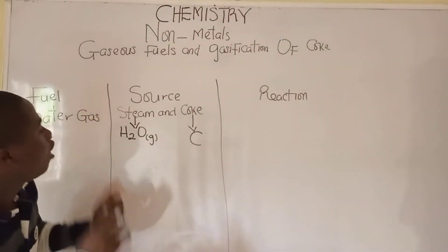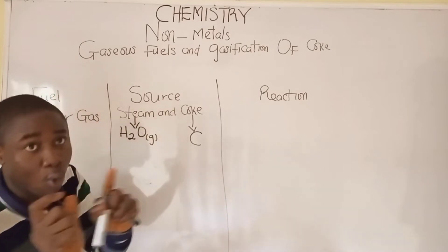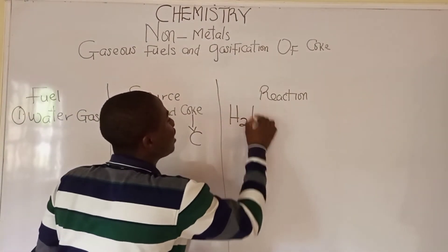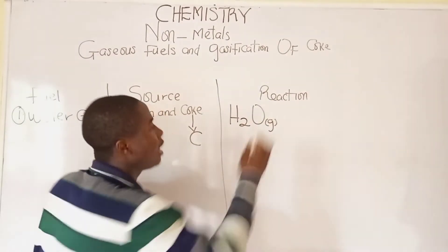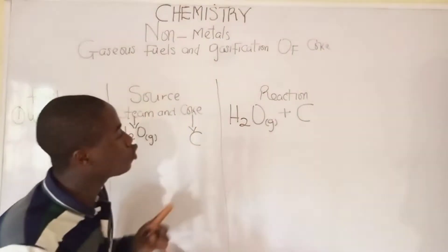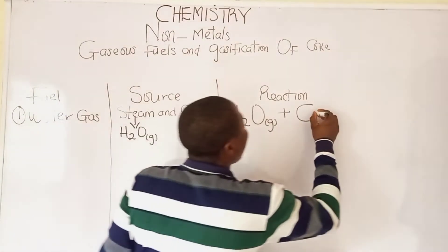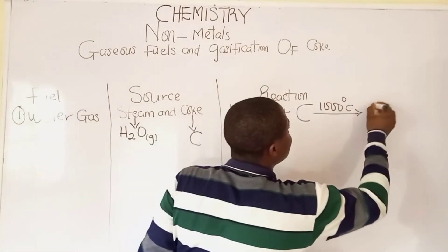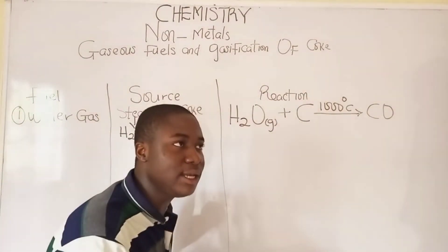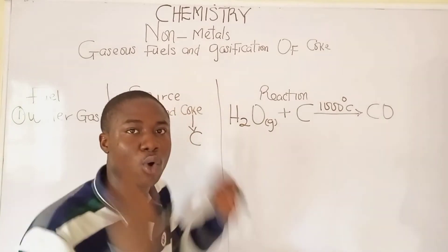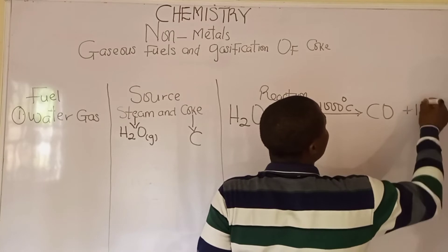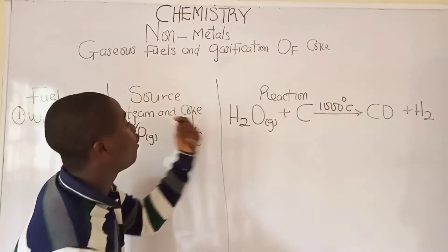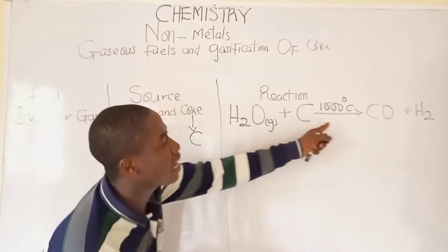When steam reacts with coke, we get water gas. The reaction: steam (H₂O gaseous) reacts with carbon (coke) at a very high temperature of about 1000°C. The products are CO (carbon monoxide) plus hydrogen gas (H₂).